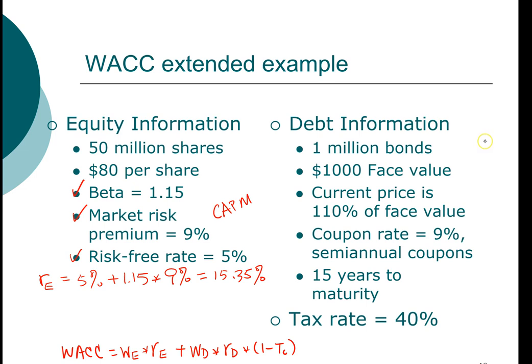Next, let's compute the cost of debt. To compute the cost of debt we need to find the yield to maturity for this firm. This is a semi-annual bond, so the number of payments remaining is 30, because it's 15 years to maturity times 2. The coupon rate is 9 percent, so the coupon payment is $90 per year divided by 2, which is $45 every six months.